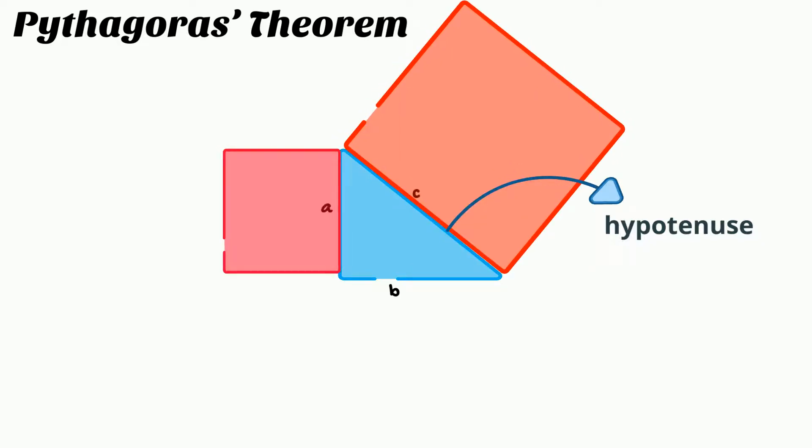c squared is equal to a squared plus b squared, which means that c is equal to the square root of a squared plus b squared.